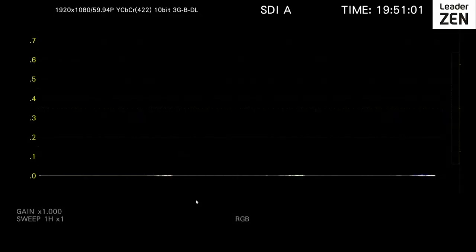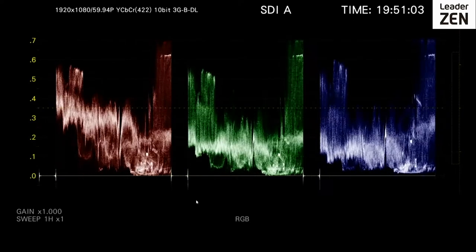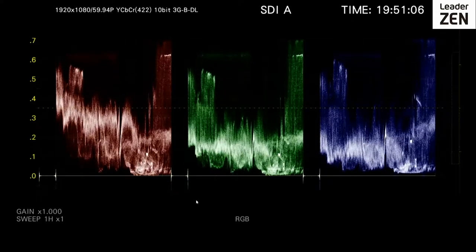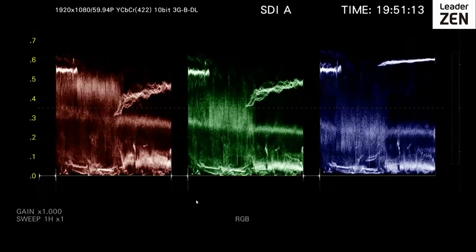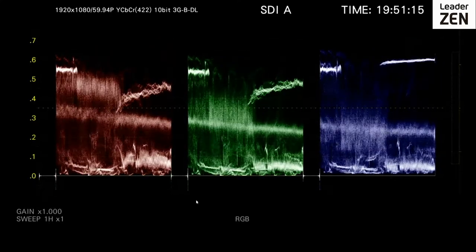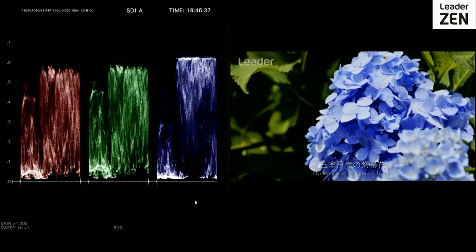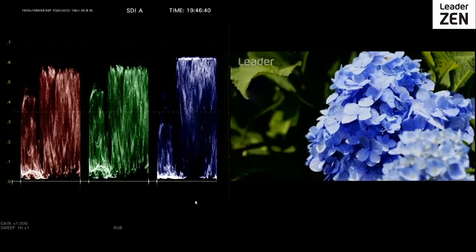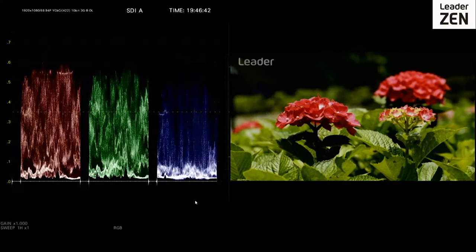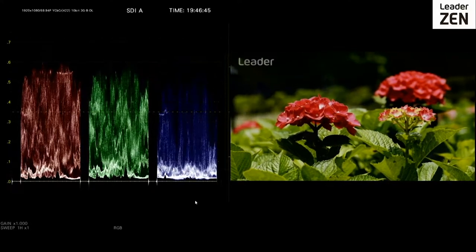The waveform monitor originated as a special type of oscilloscope used in television production applications. It is typically used to measure and display the level or voltage of a video signal with respect to time. The level of a video signal usually corresponds to the brightness or luminance of the part of the image being drawn onto a regular video screen at the same point in time.